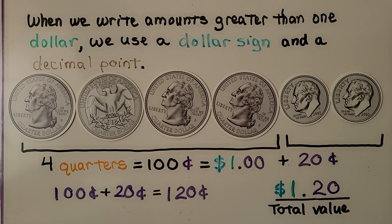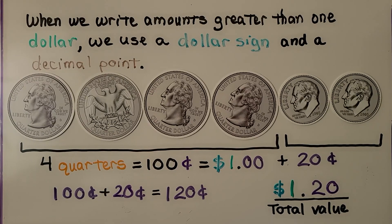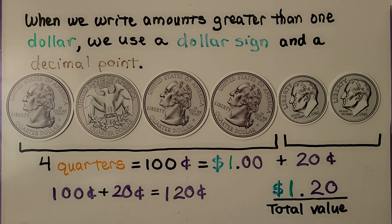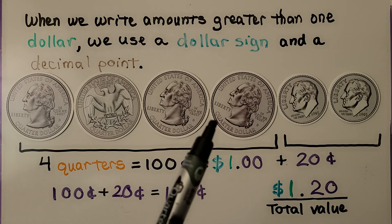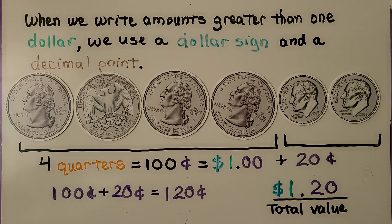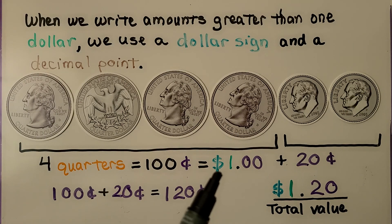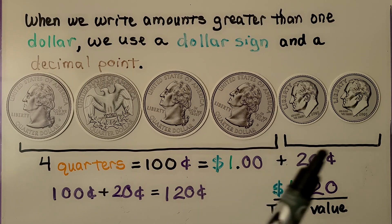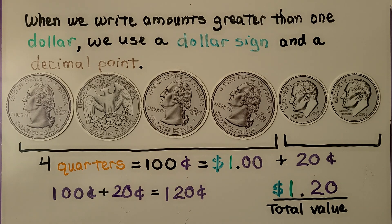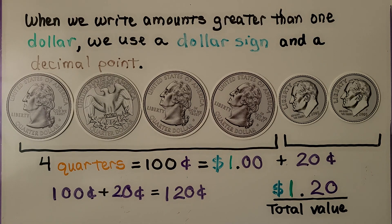When we write amounts greater than $1, we use a dollar sign and a decimal point. Here we have four quarters and two dimes. Four quarters is equal to 100 cents and that's equal to one dollar. Two dimes are equal to 20 cents. We have a dollar 20 — a dollar and 20 cents. We have 100 cents plus 20 cents, that's 120 cents. It's one dollar and 20 cents for the total value.